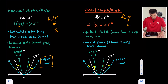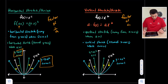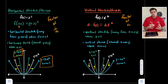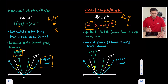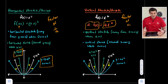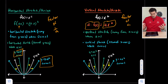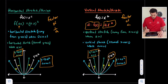A horizontal shrink happens when we shrink towards the y-axis, making the graph more narrow, and that's when a is greater than one. For vertical stretch and shrink, it is what it looks like — similar to vertical translation. We multiply the output values: a times f of x gives us ax squared with no parentheses. A vertical stretch pulls away from the x-axis when a is greater than one, and a vertical shrink compresses toward the x-axis when a is between zero and one, like one half or one third.